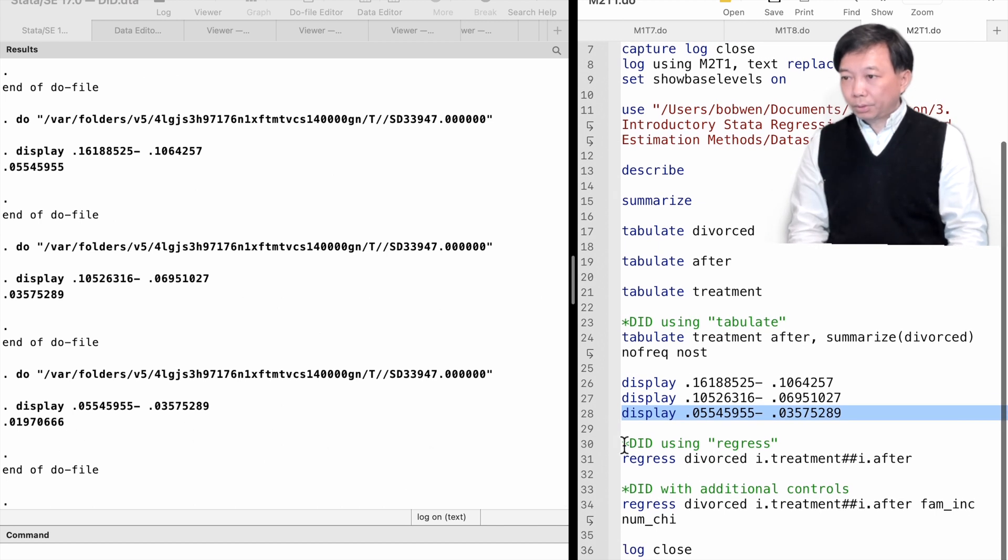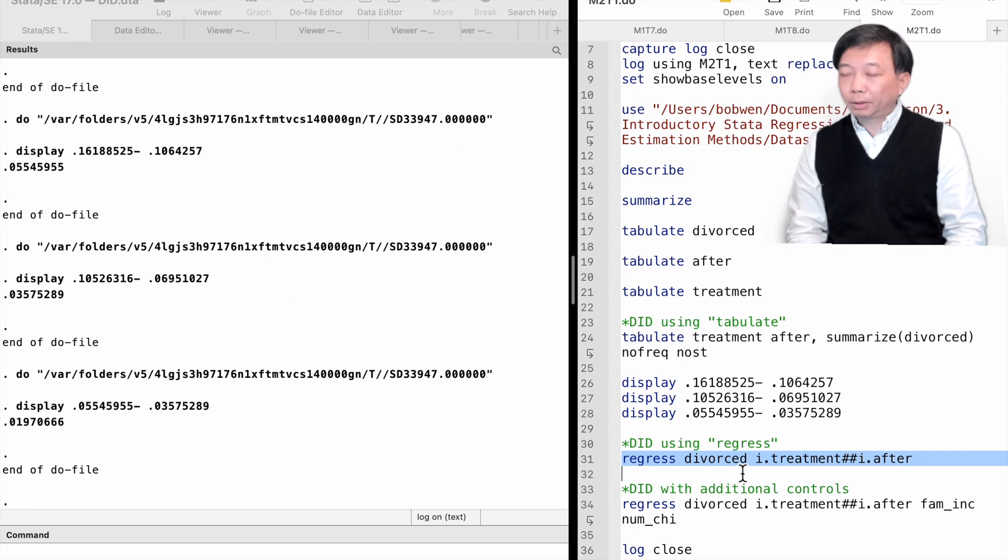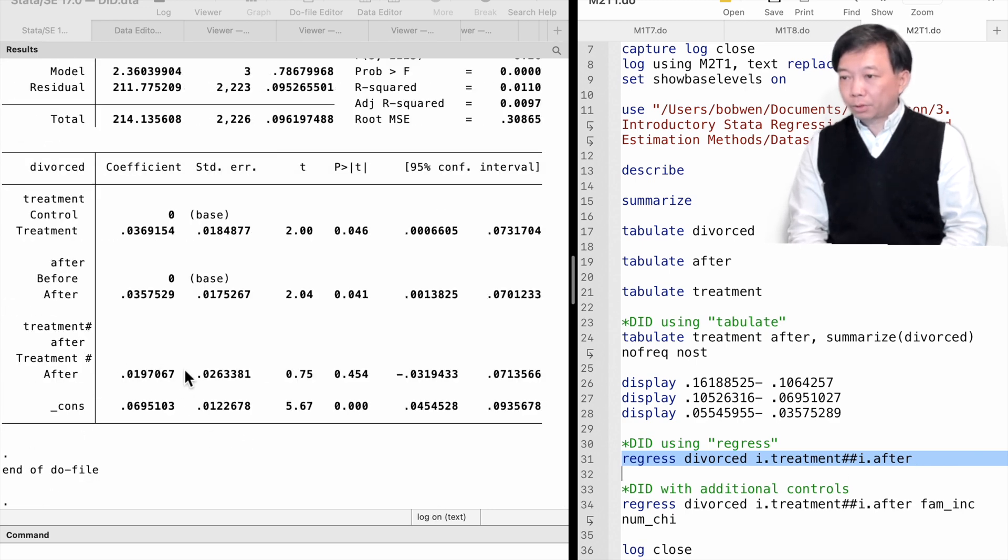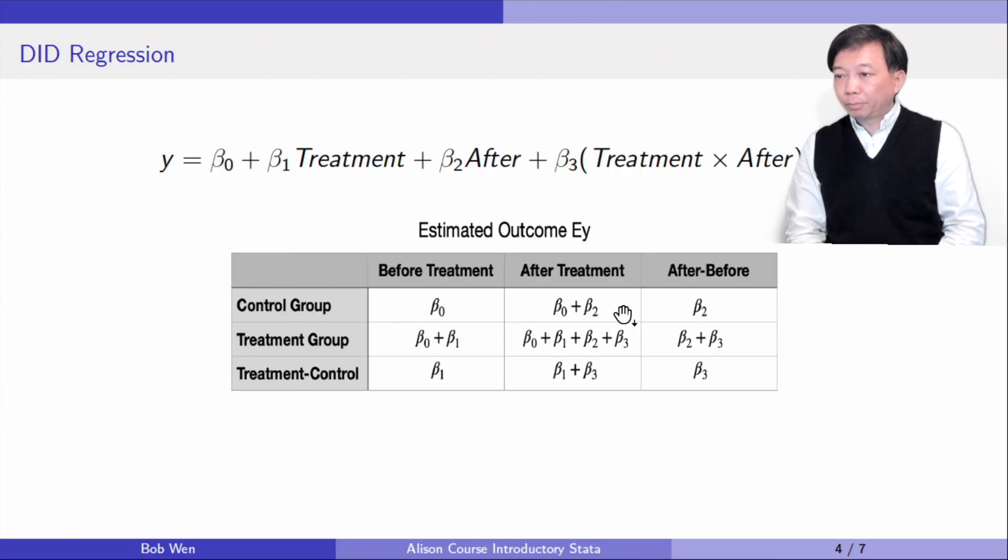We can also use the regress command to perform the difference in differences regression. The i. prefix tells Stata they are dummy variables. The double hashtags include the interaction term between the two variables treatment and after in the model. Let's run the regression and here's the output. From this table, we know that beta 1 is the difference between the two groups before the treatment. Beta 2 is the change after treatment for the control group.